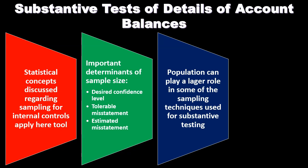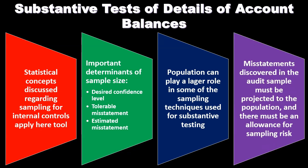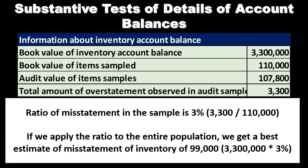Population can play a larger role in some of the sampling techniques used for substantive testing. We noted that especially when considering statistical sampling, the population size might not affect sample size as much in controls testing — but here, population plays a larger role in substantive testing as opposed to testing of controls. Misstatements discovered in the audit sample must be projected to the population, and there must be an allowance for sampling risk.